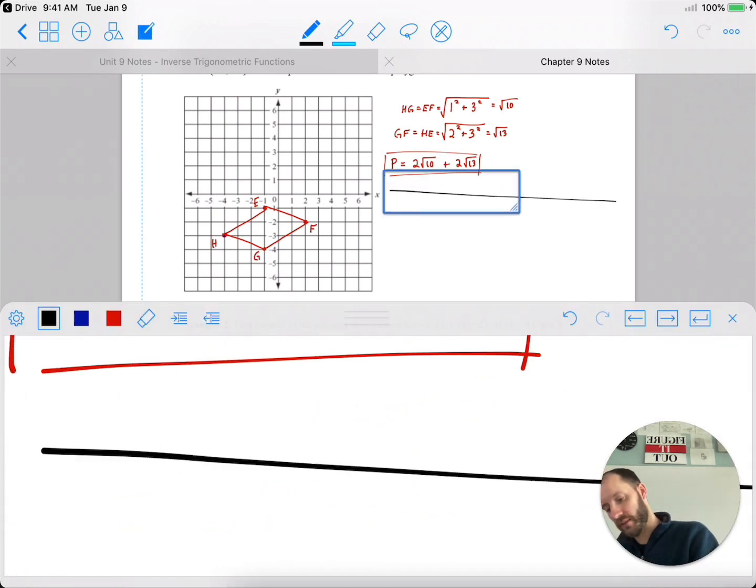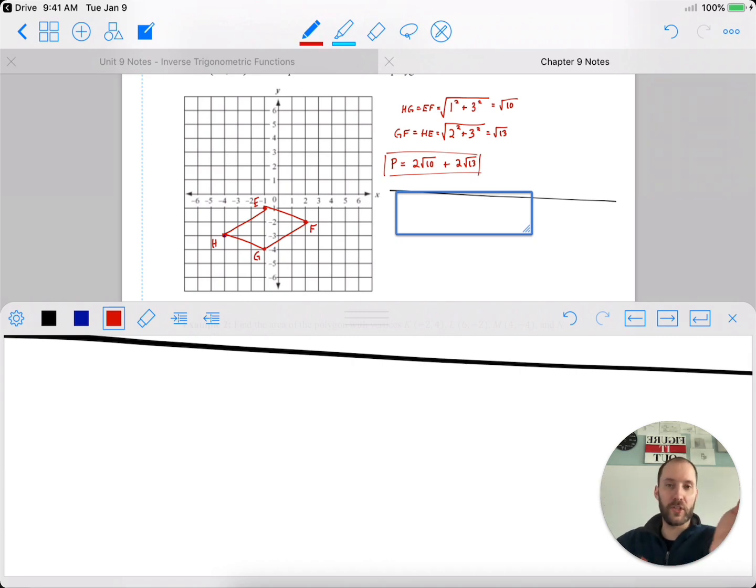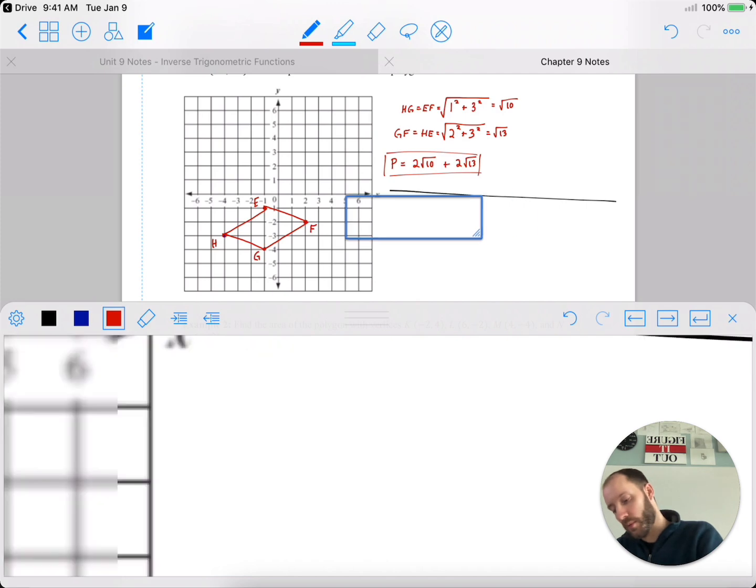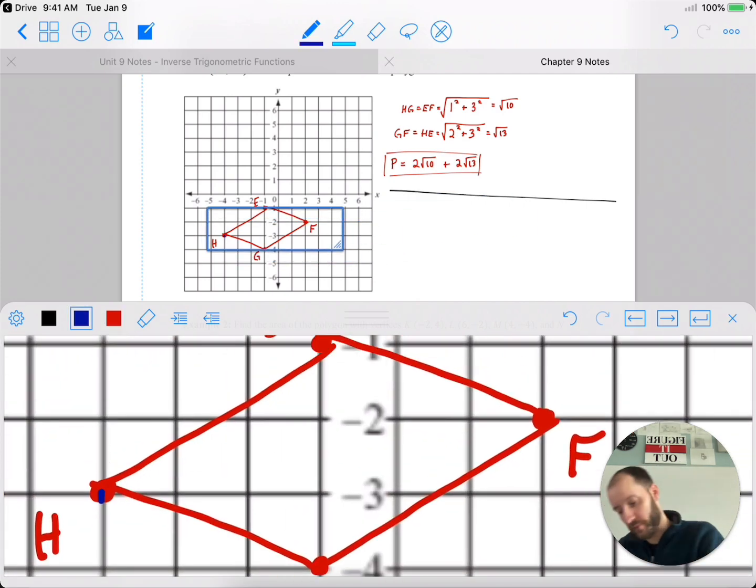Now to find area, it would be nice if the parallelogram was rotated over a little, it was straight across, straight up down, we could just do base times height. But unfortunately, it's kind of diagonally rotated. So, we'll break it up into two shapes that are horizontally and vertically aligned. We'll break it up into two triangles. Both of those triangles have a base of 3 and a height of 3.